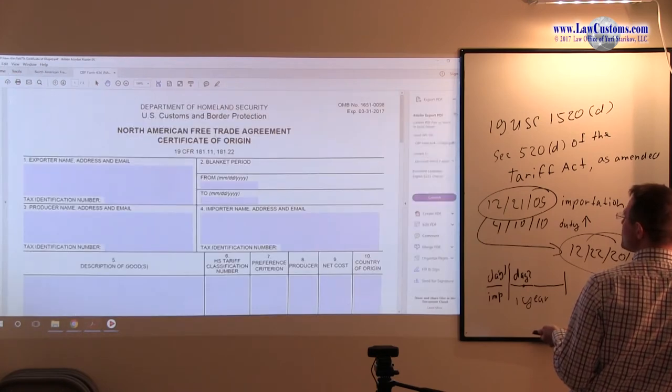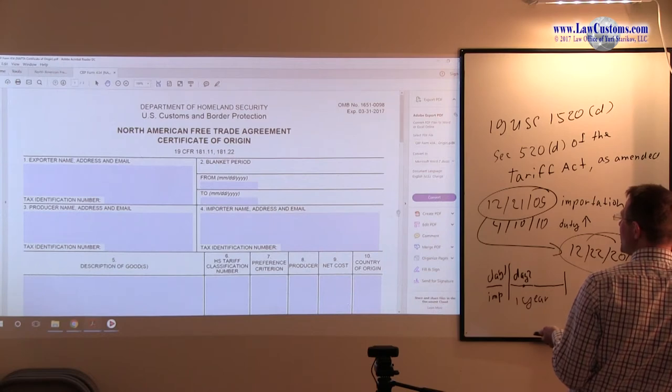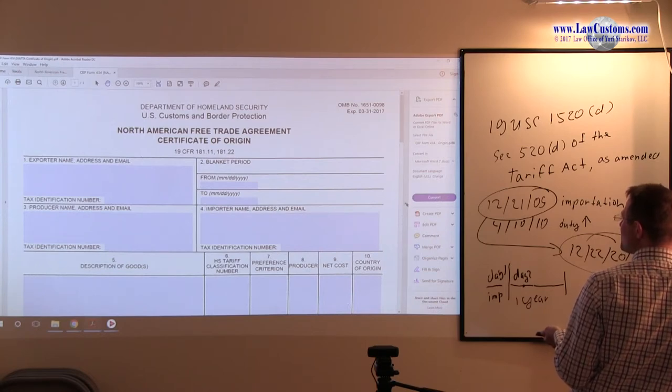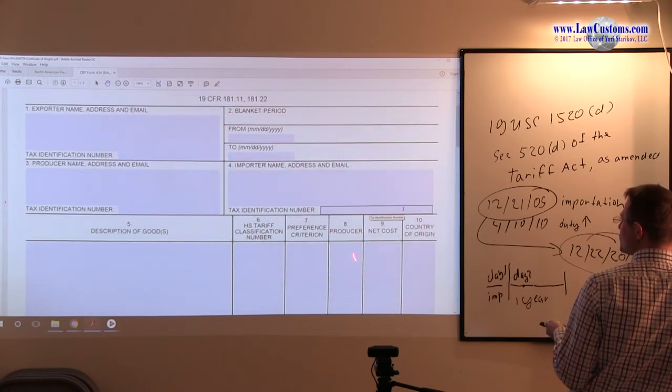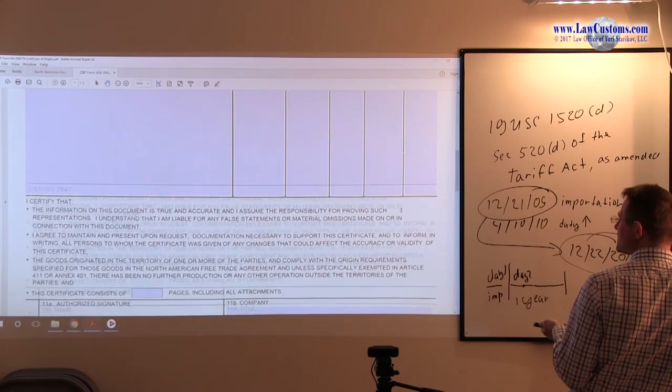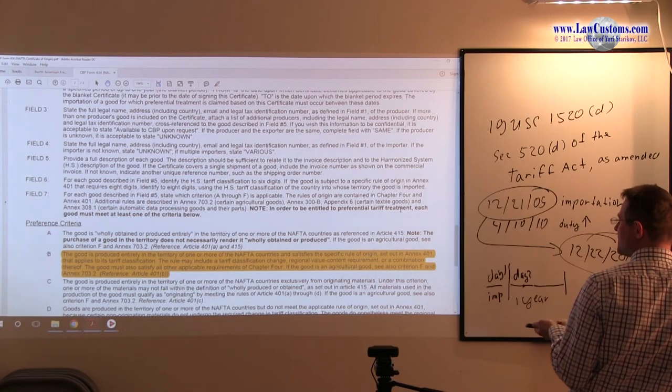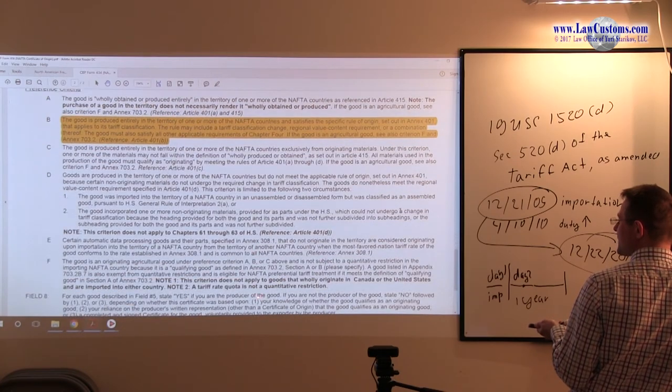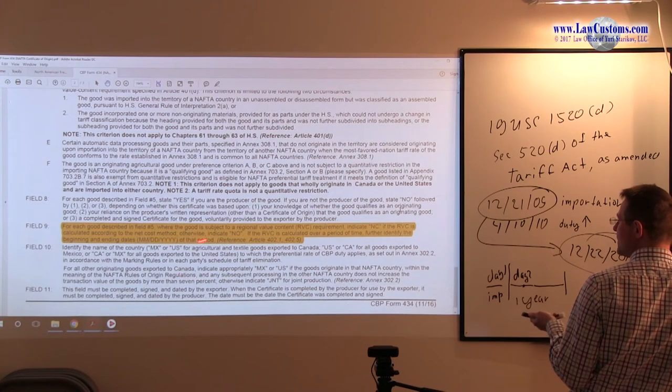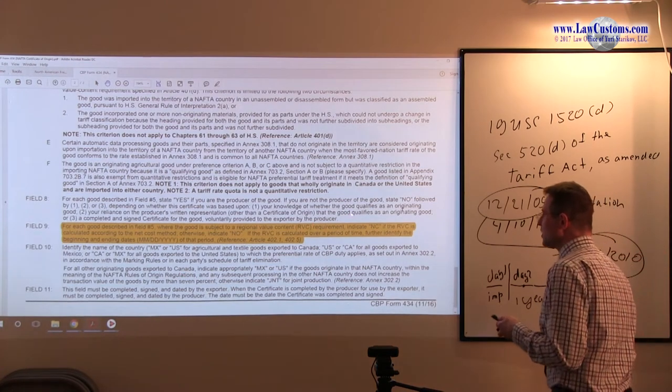I just brought up one such copy of the certificate of origin, and notice you kind of have to provide the net cost, and you have to provide the criteria. In the instruction we can see that the net cost itself contains original value requirement.